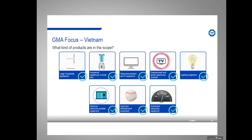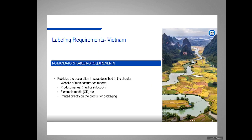The products in scope for Vietnam are a typical list similar to some of the earlier schemes. There are no marking requirements for Vietnam; however, you must publicize your declaration of conformity in one of the ways described in the circular — on your company website, in the manual, on electronic media that accompanies the product, or on the packaging itself.